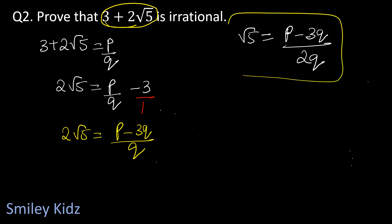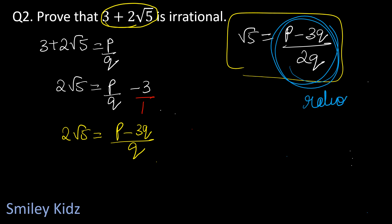Looking at this equation, the RHS — that is, (p minus 3q) upon 2q — is a rational number because p and q are integers. But on the LHS, root 5 is an irrational number. An irrational number cannot be equated to a rational number. This is a contradiction arising from the incorrect assumption that 3 plus 2 root 5 is rational.